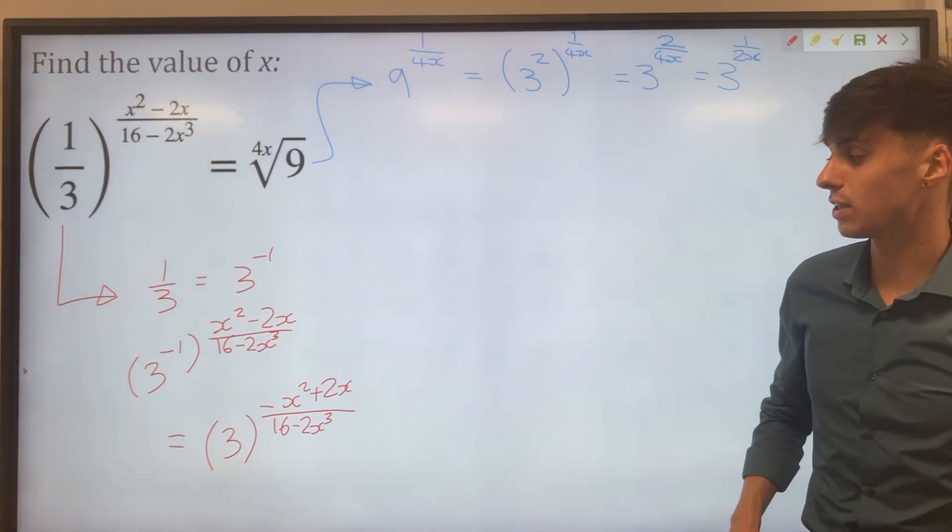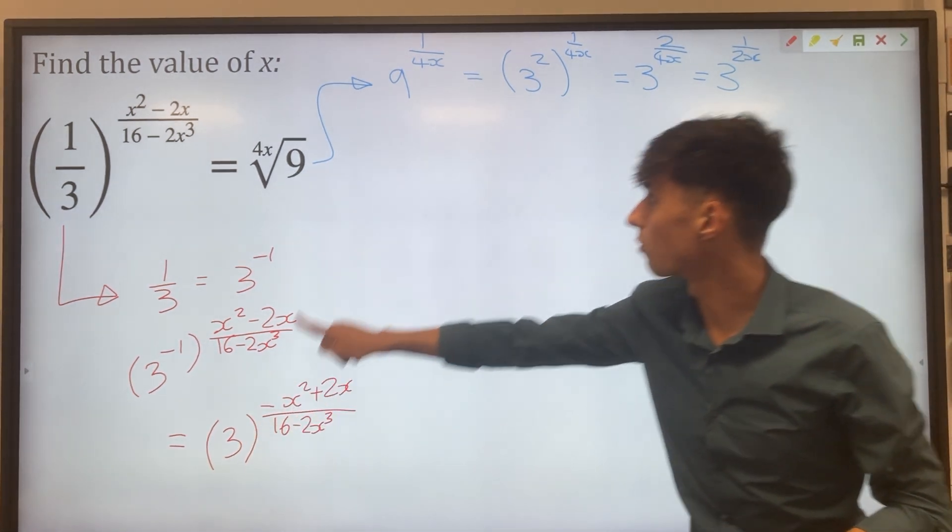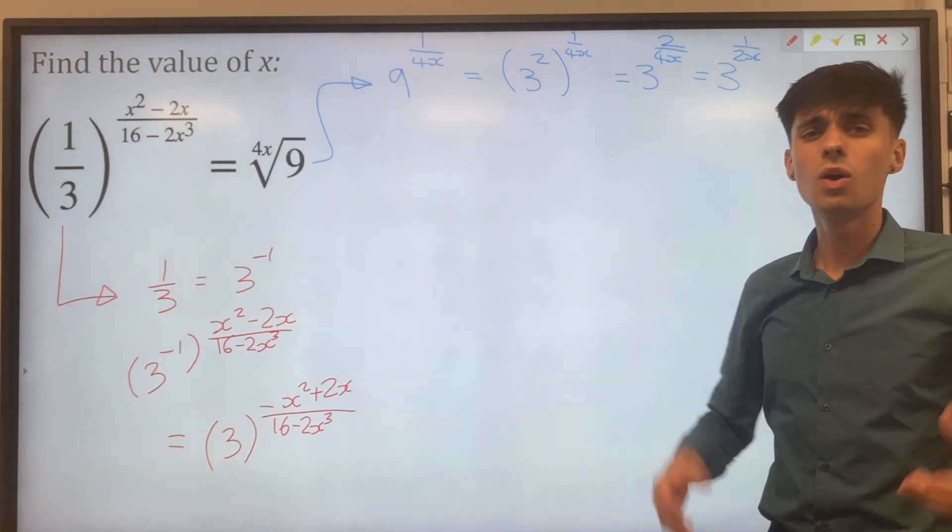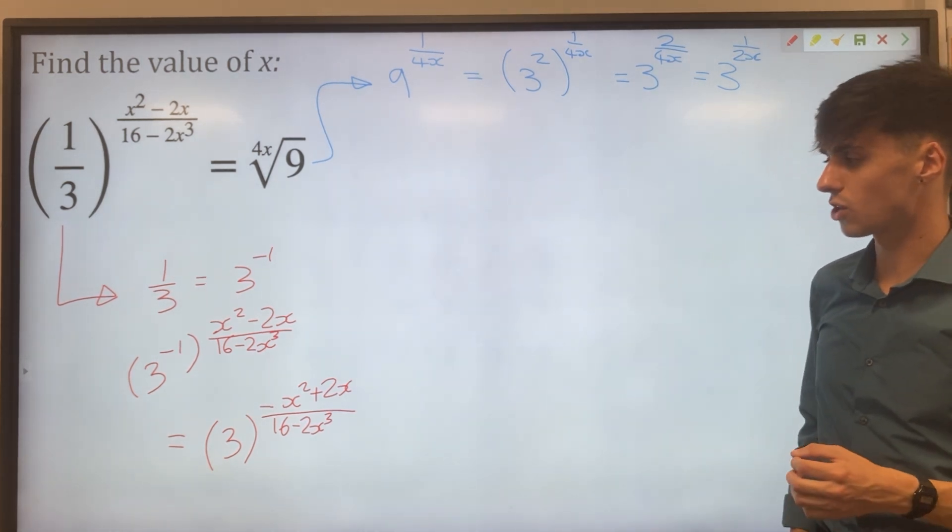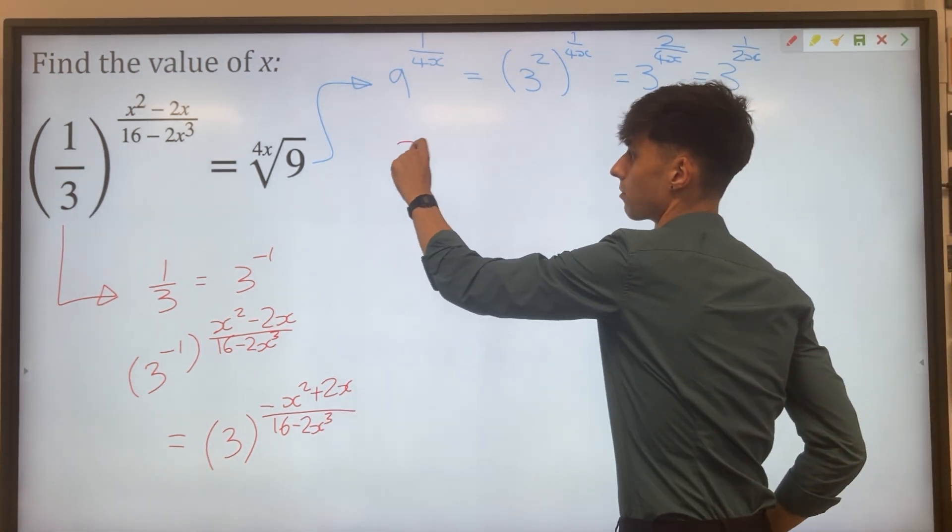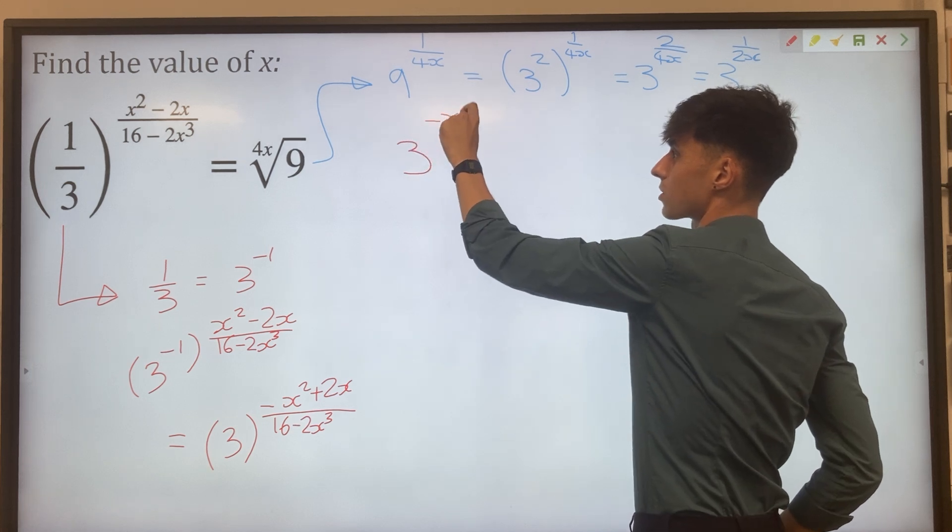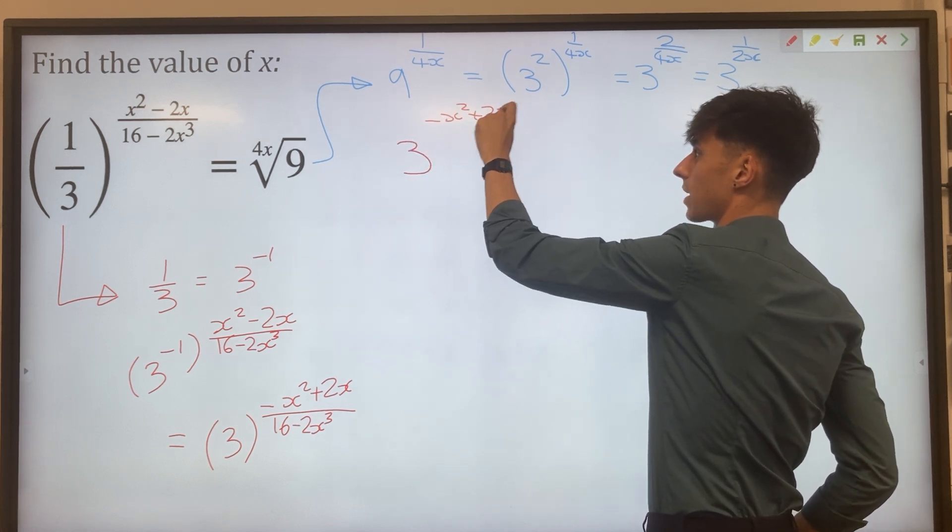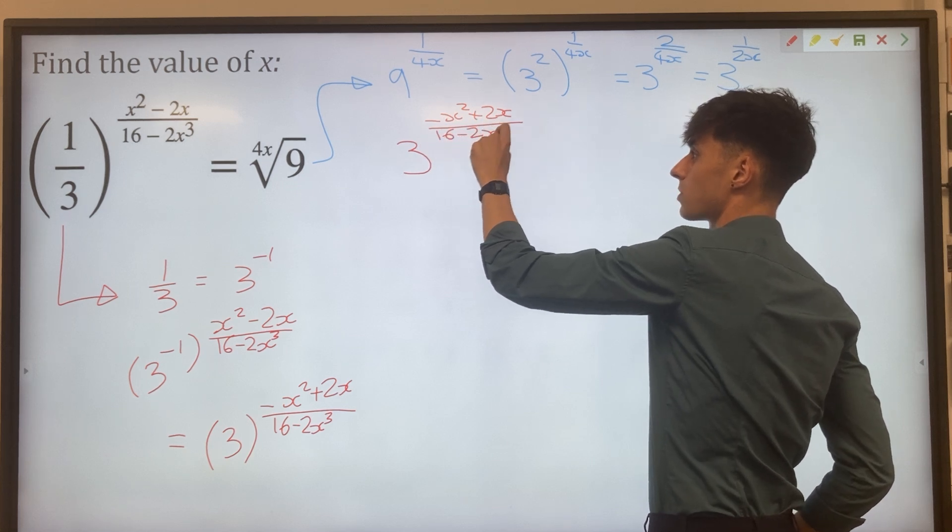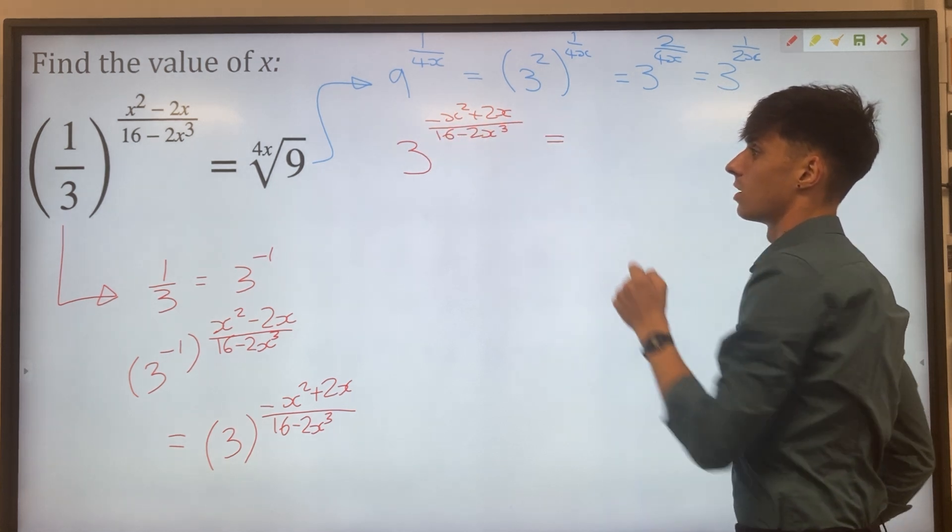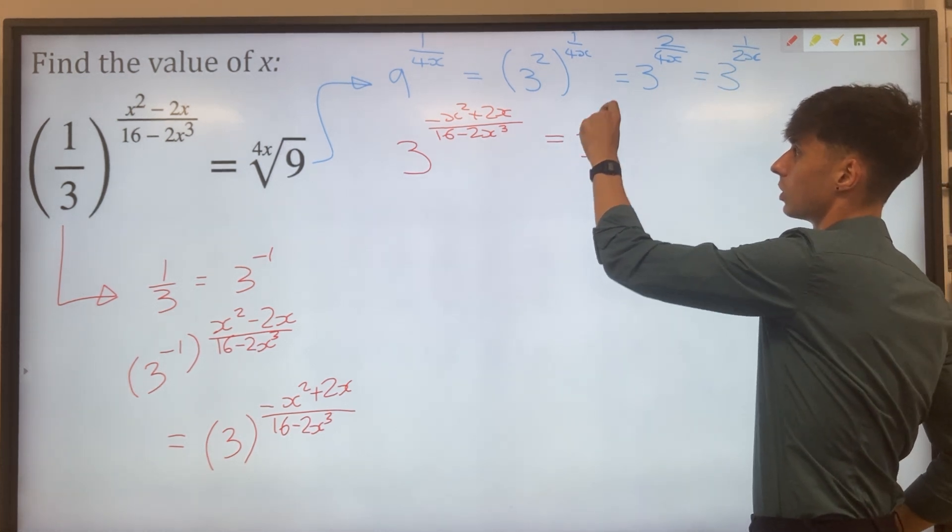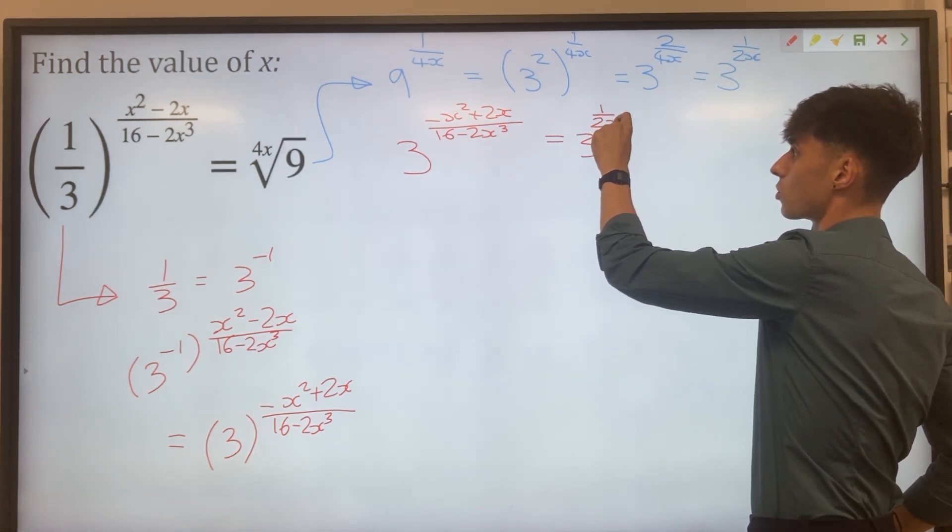So now we have both of these numbers as a power of 3. We can nicely link them together. Let's rewrite our equality that we started off with then. This was our left hand side. So we have 3 to the power of minus x squared plus 2x over 16 minus 2x cubed. And on the right hand side we've got 3 to the power of 1 over 2x.